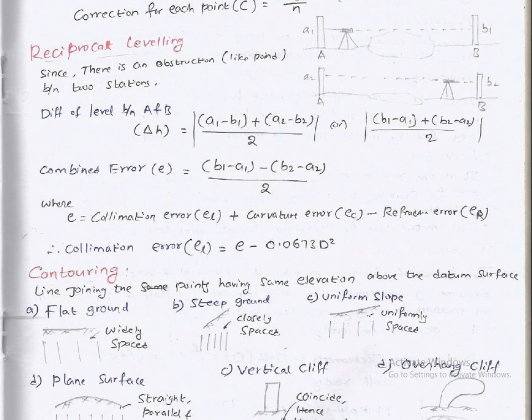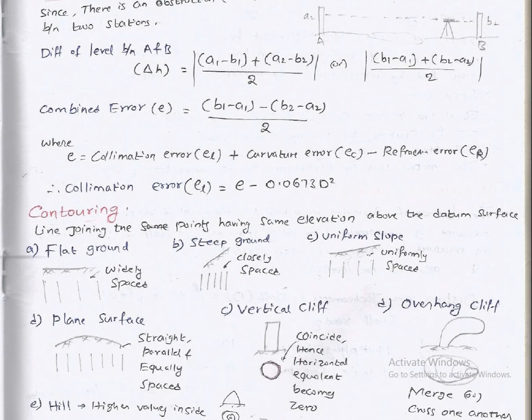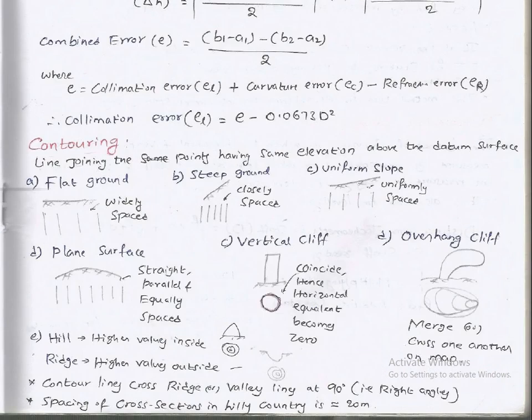Contouring: line joining the points having same elevation above the datum surface. Flat ground, widely spaced. Steep ground, closely spaced. Uniform slope, uniformly spaced. Plain surface, straight, parallel, and equally spaced. Vertical cliff, one side hence horizontal equivalent becomes zero. Overhanging cliff, contours merge and cross one another. Hill, higher value inside. Ridge, higher value outside. Contour lines cross ridge or valley line at 90 degrees, that is right angle. Spacing of cross section in hilly country is 20 meters.